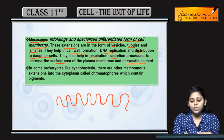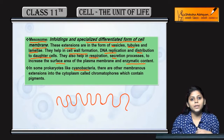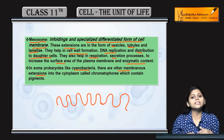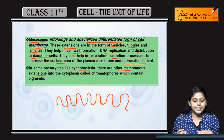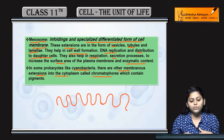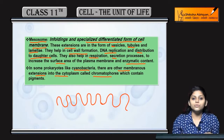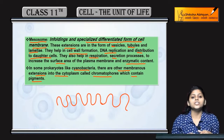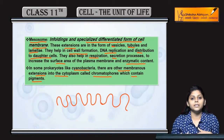In some prokaryotes like cyanobacteria, जिसे blue-green algae बोलते हैं, membranous extensions होती हैं जो membrane को cytoplasm में extend करती हैं. उन्हें chromatophores बोलते हैं. These chromatophores are known to contain some pigments जिनकी वजह से color impart होता है.